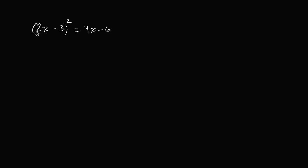Well, let's look at this. We have 2x minus 3 squared on the left-hand side. On the right-hand side, we have 4x minus 6. Well, 4x minus 6, that's just 2 times 2x minus 3. Let me be clear there.